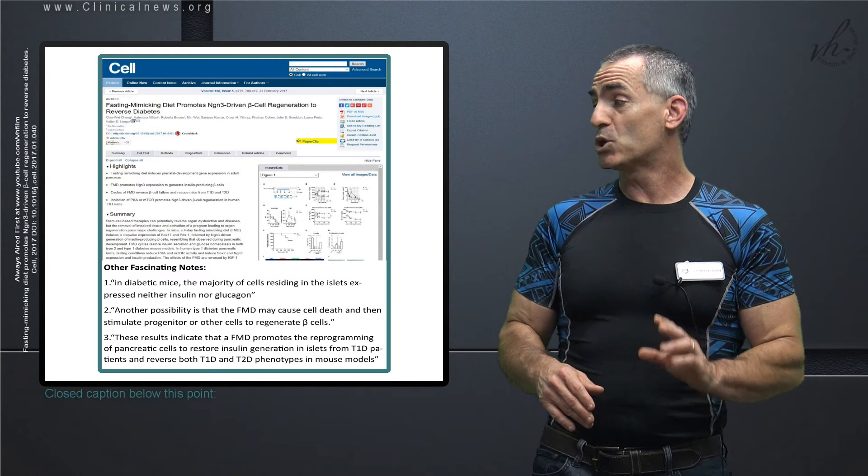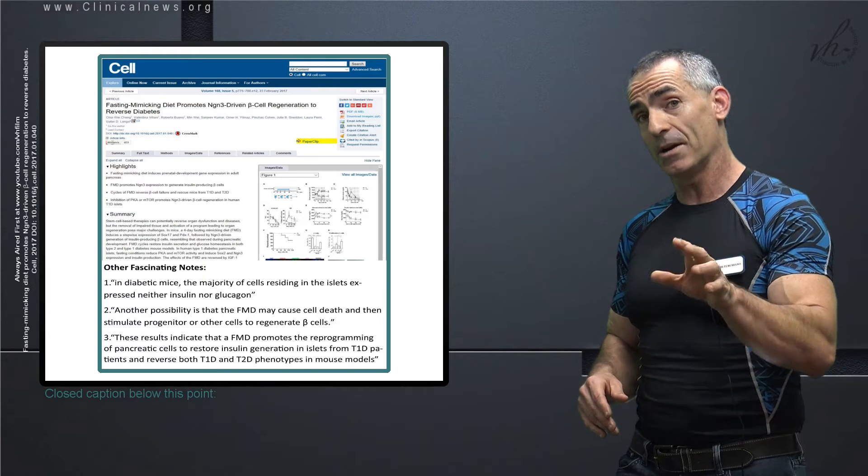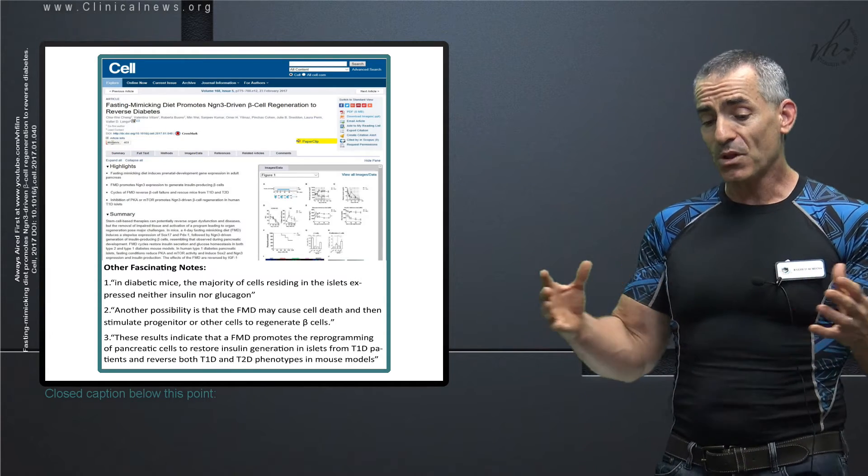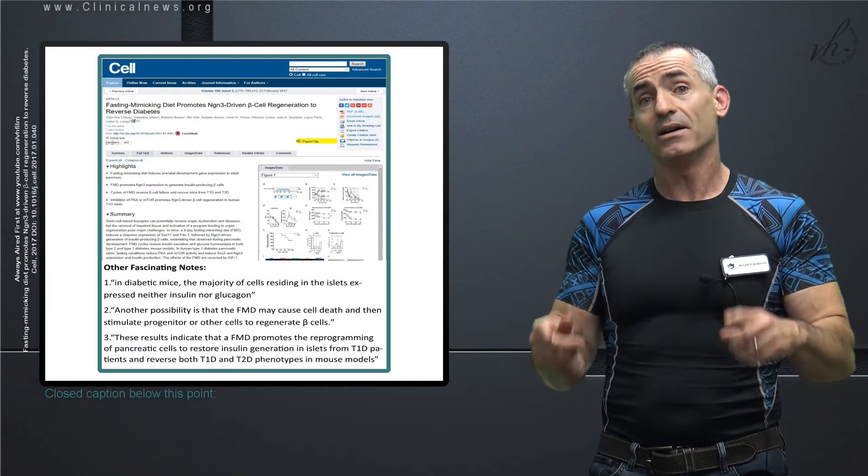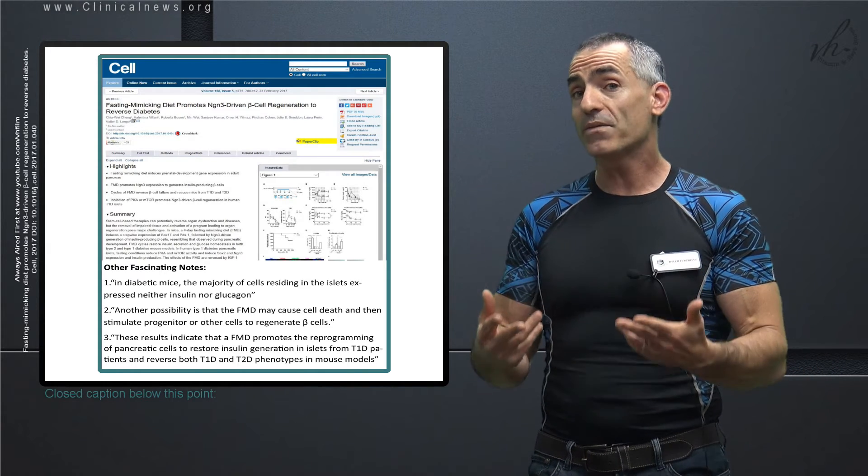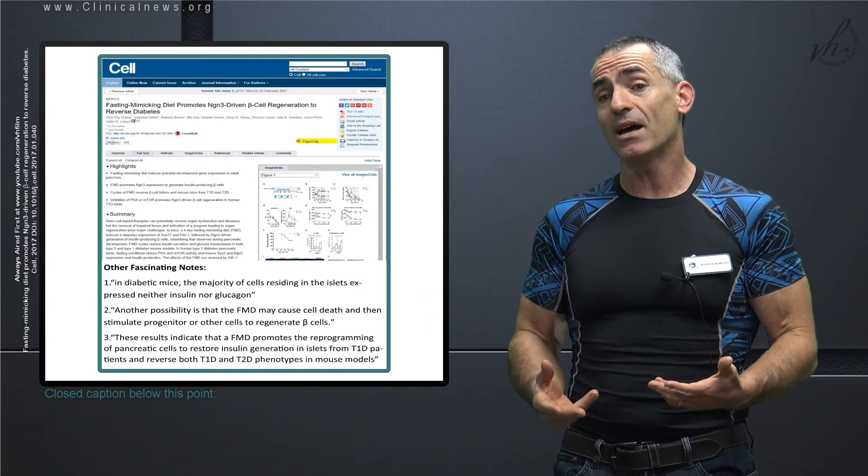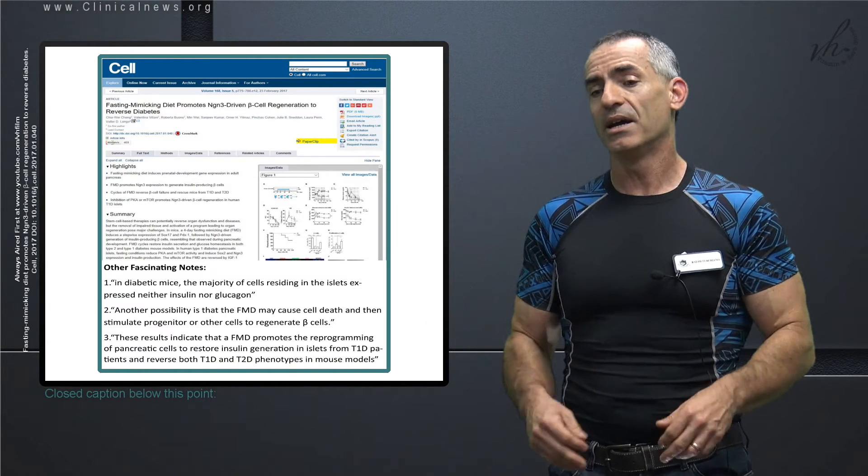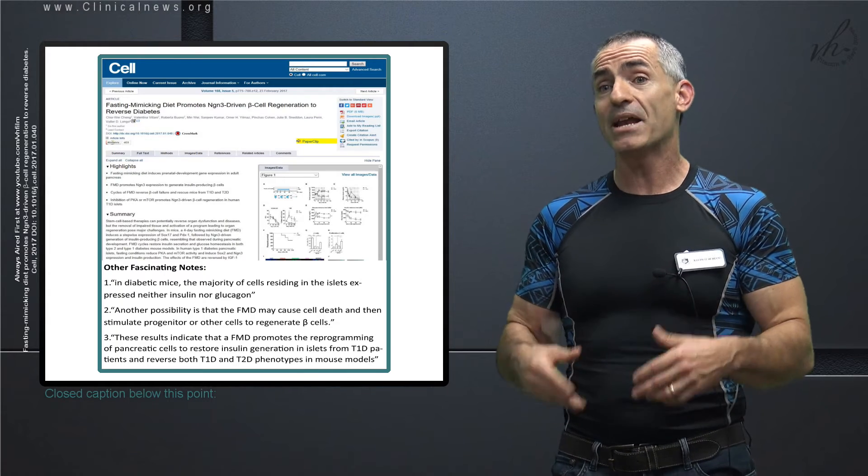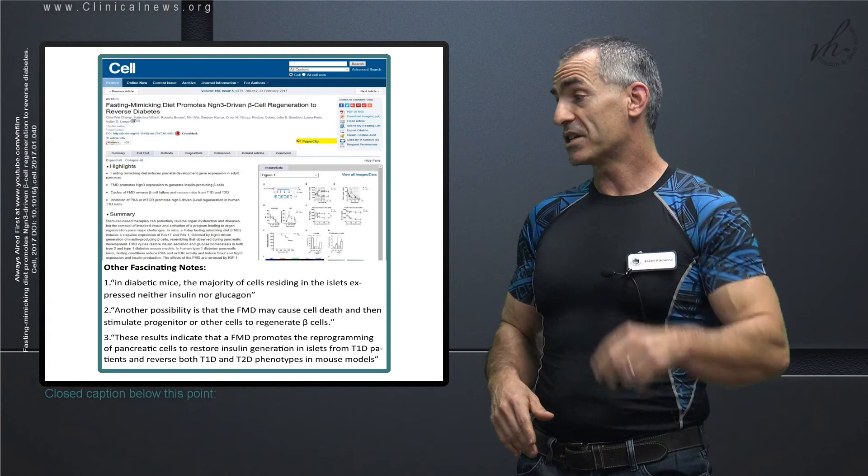In diabetic mice, the majority of cells residing in the islets expressed neither insulin nor glucagon. So the cells were just doing nothing until the fasting mimicking diet kicked in. And for whatever reason, the body knew to reprogram those cells or get rid of those cells and put into place beta producing or insulin producing cells, henceforth reversing the disease condition.